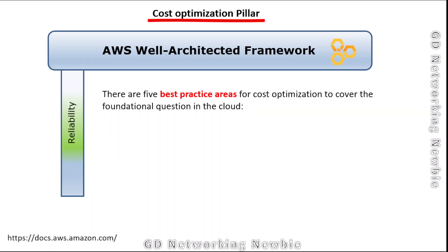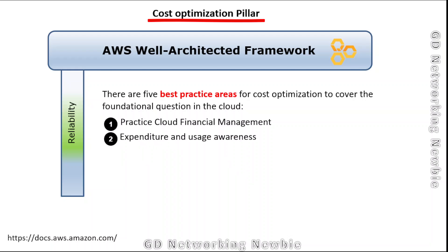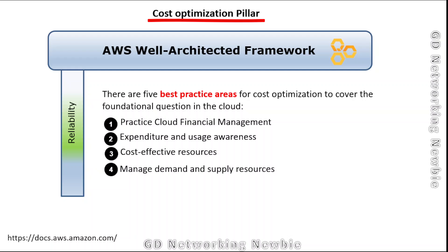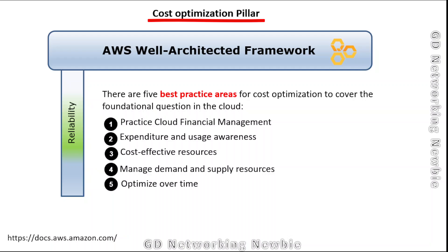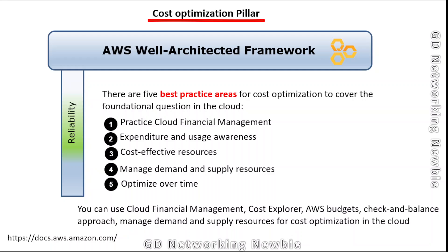In addition to those design principles, there are five best practice areas for cost optimization covering foundational questions in the cloud: practice cloud financial management, expenditure and usage awareness, cost-effective resources, manage demand and supply resources, and optimize over time. AWS provides services like Cost Explorer and AWS Budgets to help manage demand and supply resources for cost optimization.